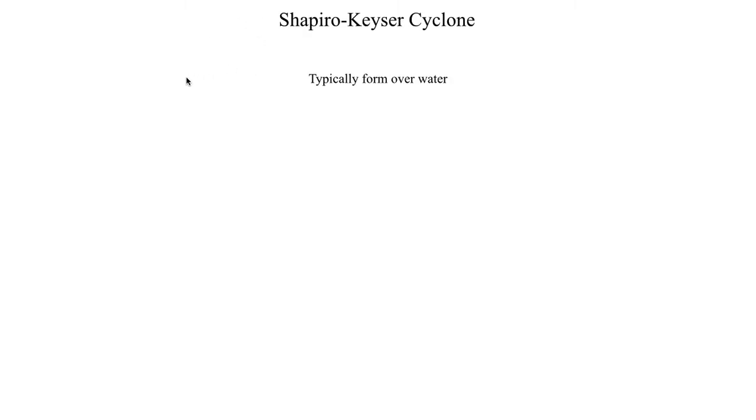Hello class, welcome to the final segment in lecture 18. In this final segment we're going to talk a little bit about Shapiro-Kaiser cyclones, which are a special type of extratropical or mid-latitude cyclone that we can have in the atmosphere. So with that we will get right into it.